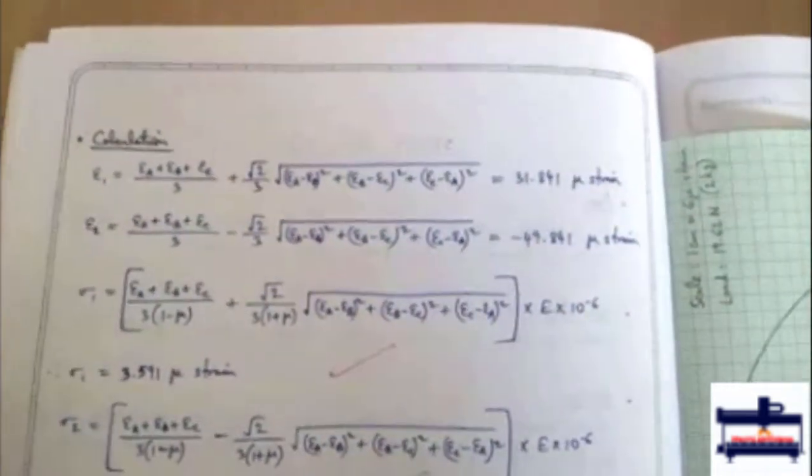Now these values are noted down in this table in this format and to calculate the principal stresses, principal strains, tau max and gamma max, these are the equations we use.